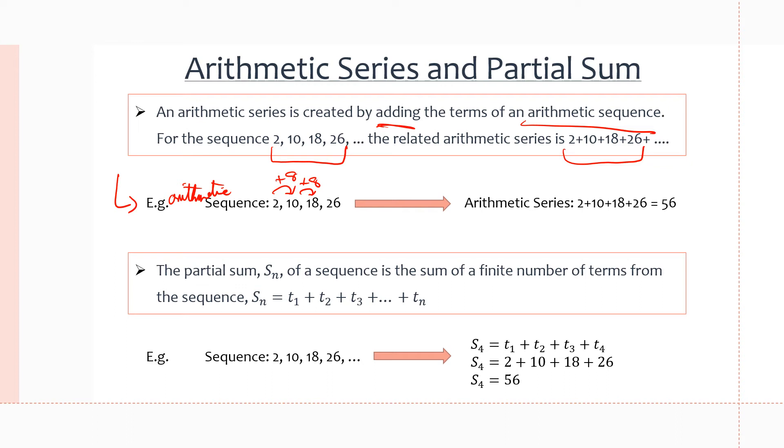And next, the partial sum of a sequence is the sum of a finite number of terms. Or if the sequence has infinite terms, it could be the sum of all the numbers, making n equals infinity. So if a sequence goes on forever, maybe you could calculate for the sum of n terms when n equals infinity. But for now, we'll stick to finite numbers of terms from a sequence.